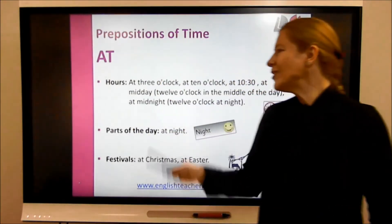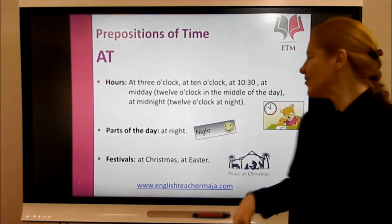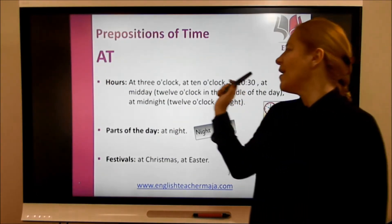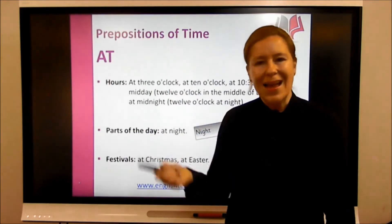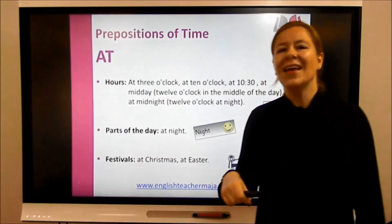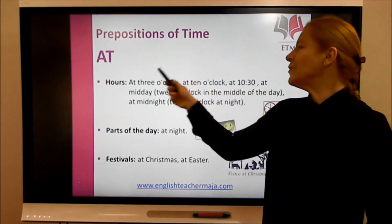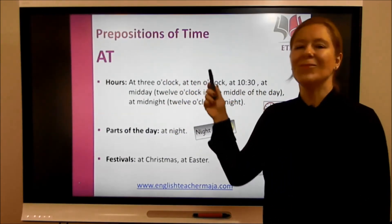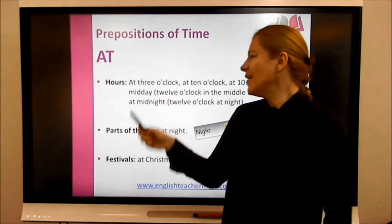Now the last preposition: 'at.' We use 'at' when we talk about specific hours. For example, at 10 o'clock, at 3 o'clock, at 5 a.m., at 6 p.m., at 6:15.